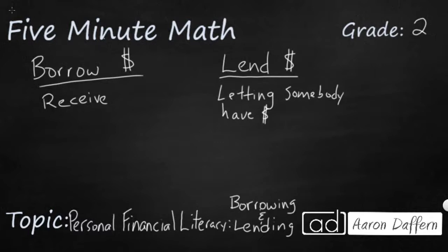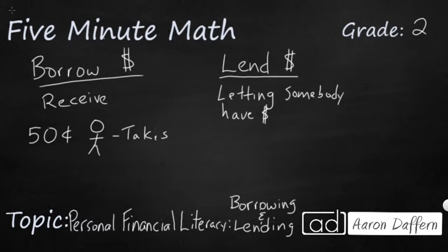Let's talk about a few situations. Let's say you're at school, you've got some lunch money, and your friend asks you for 50 cents. He wants 50 cents because he wants to get some takis from the lunch line. Here's the problem with this situation: this friend has asked other friends for 50 cents for takis, you've seen other people give this friend 50 cents, and he has never paid them back. So this friend is what we call an unreliable borrower.